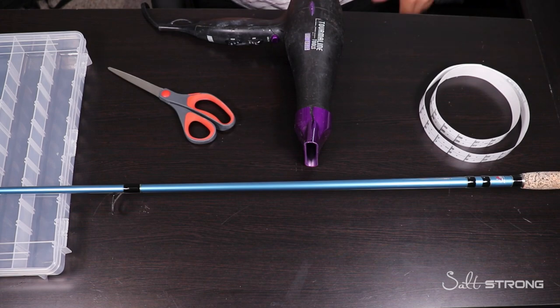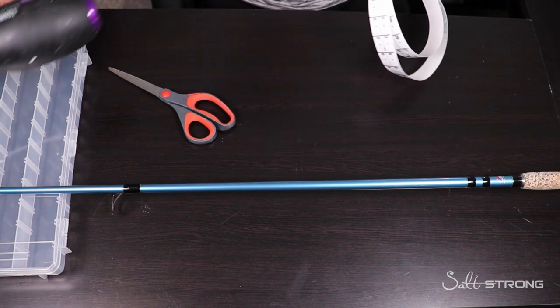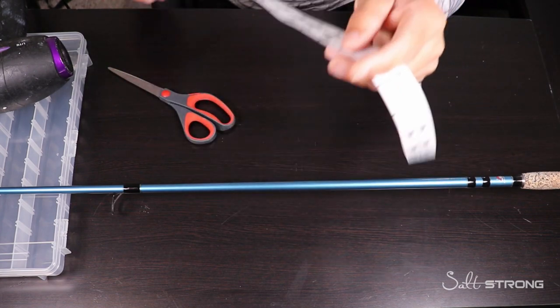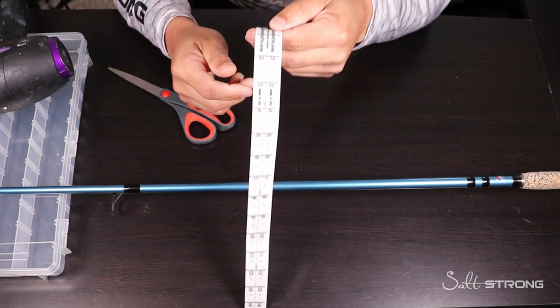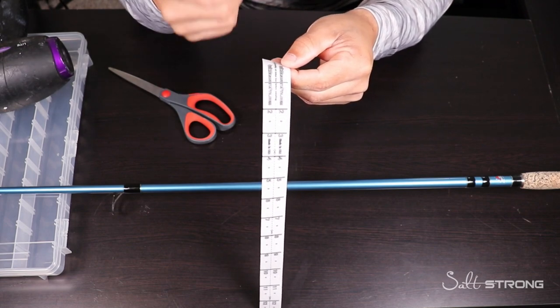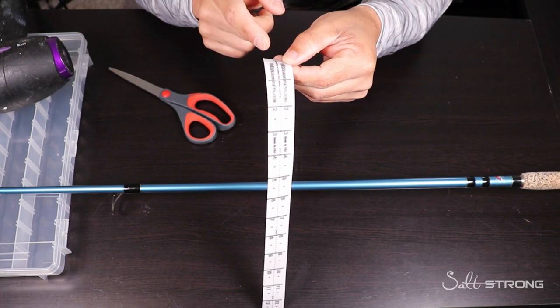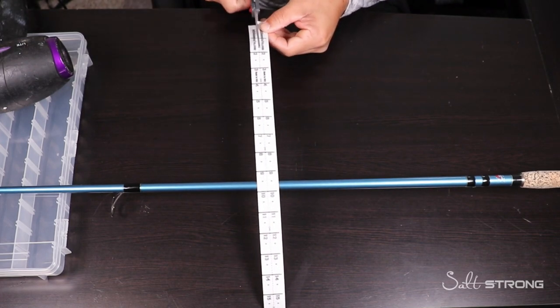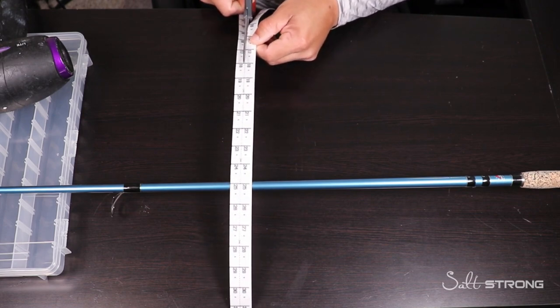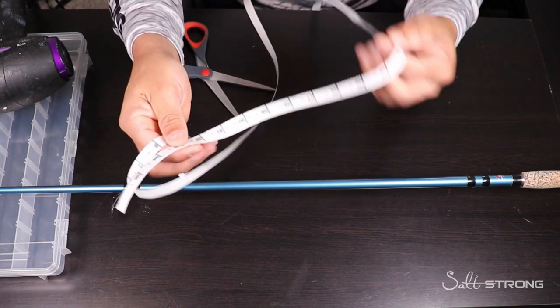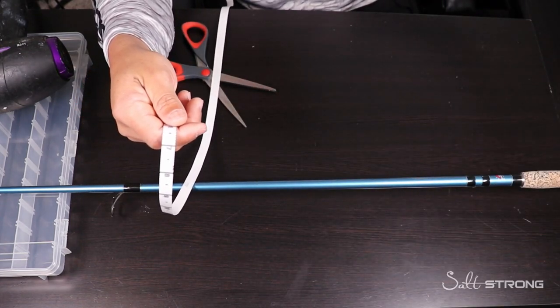We'll just let that dry for a second. Next thing you're going to do is take the rod ruler and you want to cut it in half. What I mean by that is both of the tapes are on one basically sheet, so you have to cut down that center line to separate them. So go ahead and do that here real quick. So now we have both tapes separated.